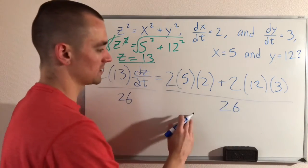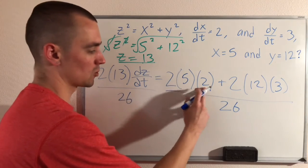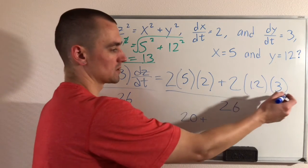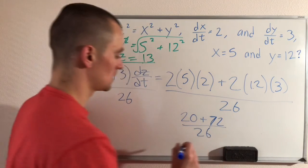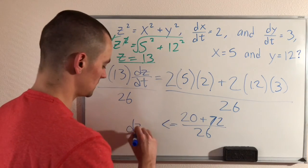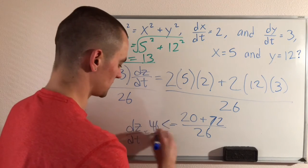And then simplifying all this out, we're going to get 5 times 2 is 10 times 2 is 20, plus 2 times 12 is 24, times 3 is going to be 72, over 26. And simplifying this is going to tell us that dz/dt equals 46 over 13.